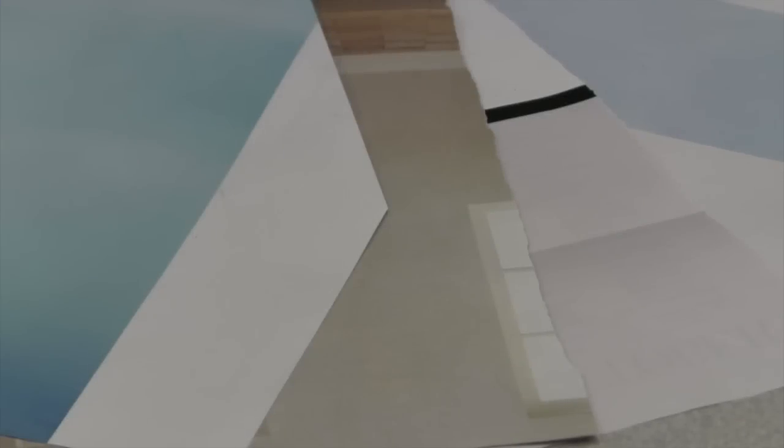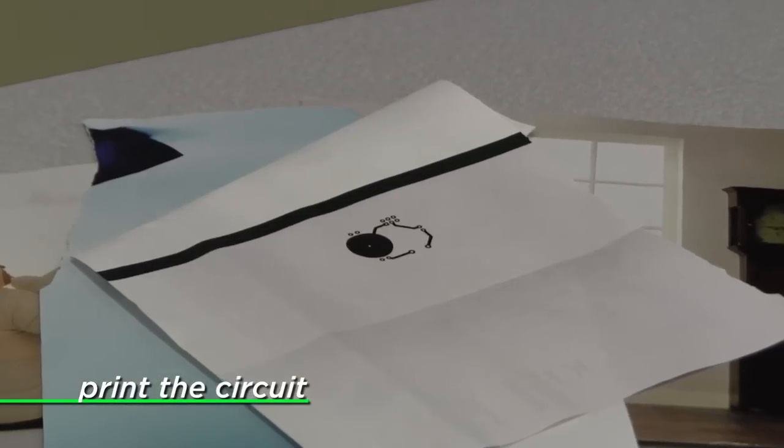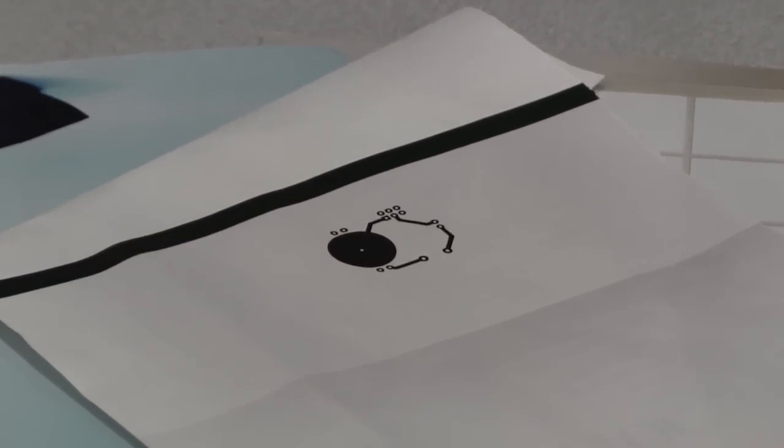Next, we take the circuit that we've made on the computer and print it out with a laser printer onto some glossy magazine paper. We now have an image of our circuit on paper.